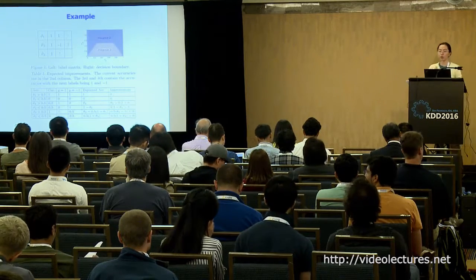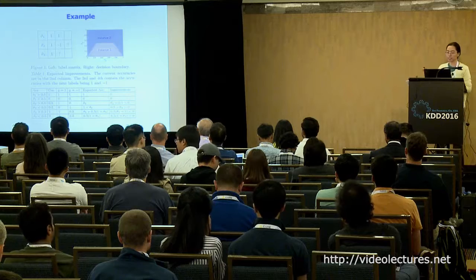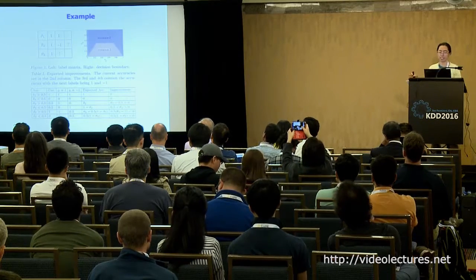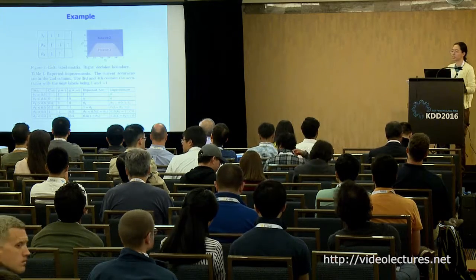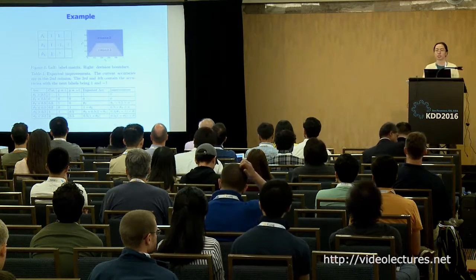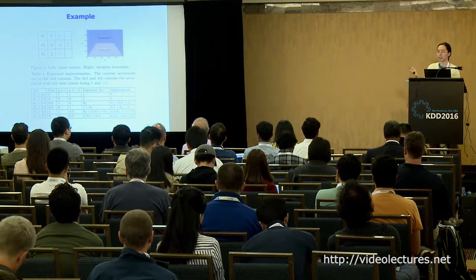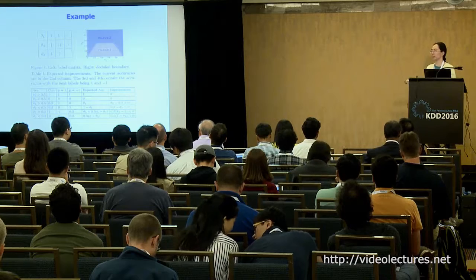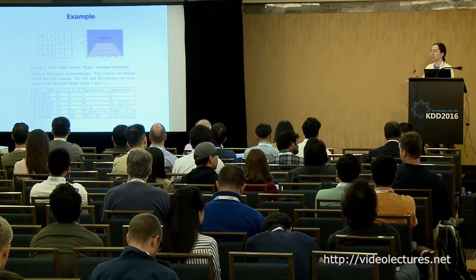Here is an example of how to maximize accuracy. Suppose we have three questions and this is the current labeling result. Question one got two positive labels, question two got one positive and one negative, and question three got one positive. Now, if I can afford one more label, which instance should I pick? If you pick question one, which already has two positives, no matter what label you get for the third, you can't change the majority voting result — so that label is wasted.